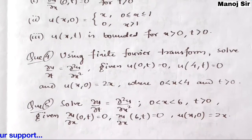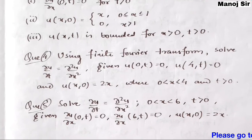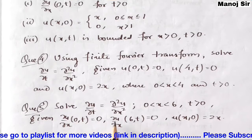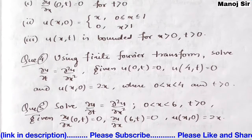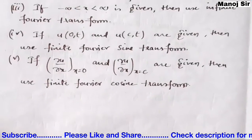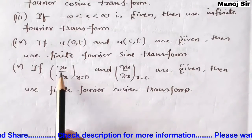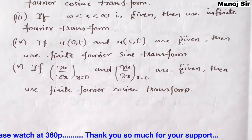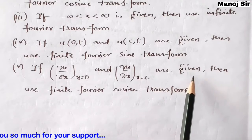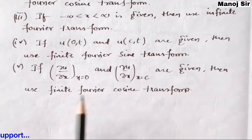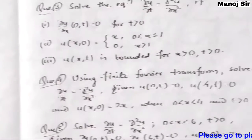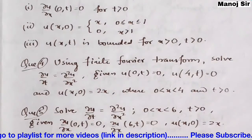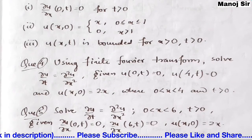In the last problem, we have ∂u/∂x at x = 0 equal to 0, and ∂u/∂x at x = 6 also equal to 0. Since ∂u/∂x is given at both x = 0 and x = C (which is 6), we are going to use the finite Fourier cosine transform. I hope it is clear which formula is used for which problem. Let us start solving the problems one by one.